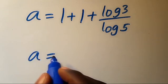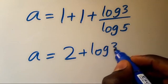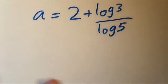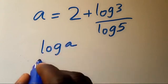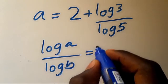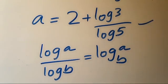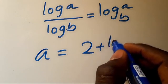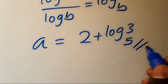1 plus 1 gives us 2, plus log 3 divided by log 5. Recall that log a divided by log b equals log base b of a. So a equals 2 plus log base 5 of 3. This is the solution for the value of a.